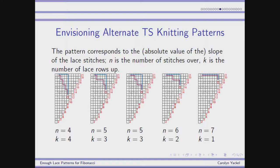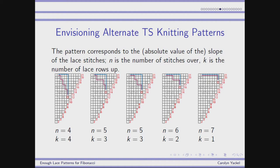This is for a smaller size pattern — a size 21 rounds — because the full-size Templeton squares take all day to make. For size 21 rounds there are basically five different patterns you can get. What we need to track is the number of stitches going over from the red stitch to the top, and also how many rows you go up. So n is the number of over-stitches and k is the number of up-rows — but I'm only counting the lace up-rows.